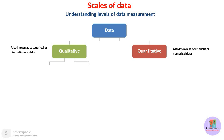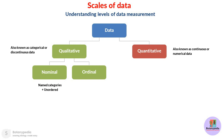Qualitative data can be further categorized as nominal data or ordinal data. Nominal data refers to data sets where the categories can be named but no order can be determined. For example, if you are categorizing a data set on the basis of gender, the respondent can either be male or female — you can put males and females in any order. There is no hierarchy, only names of categories. That kind of data is nominal data.